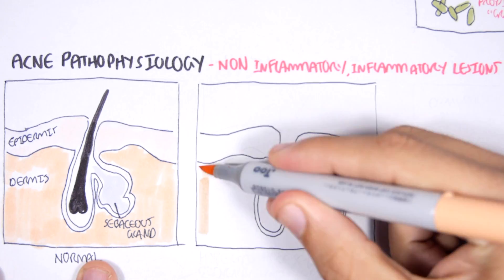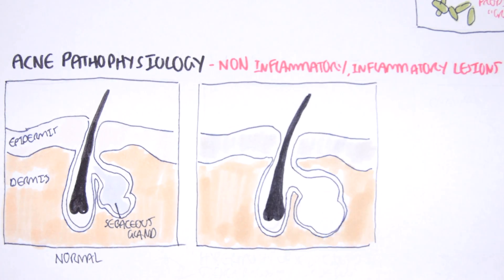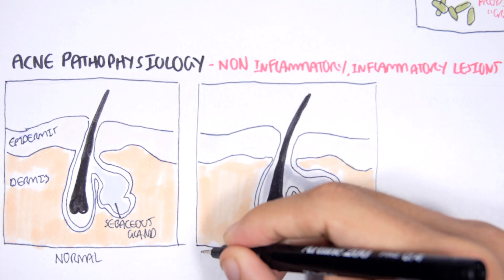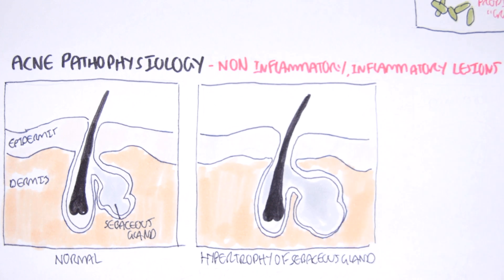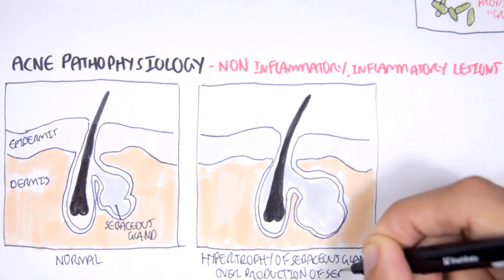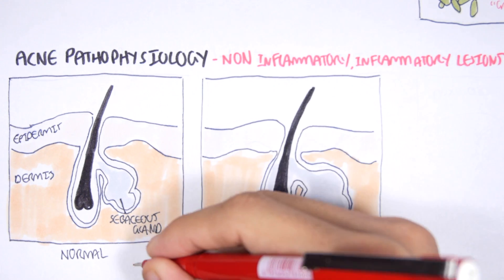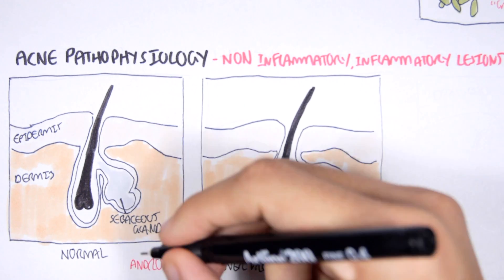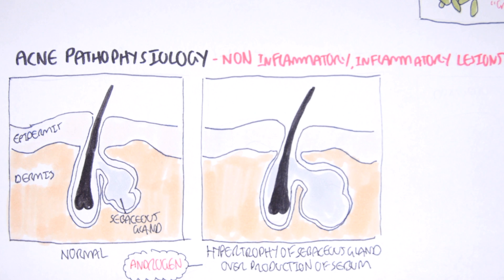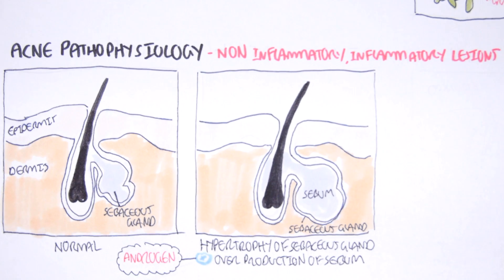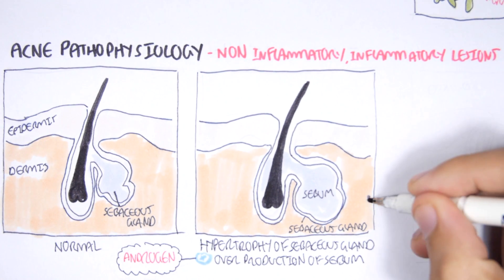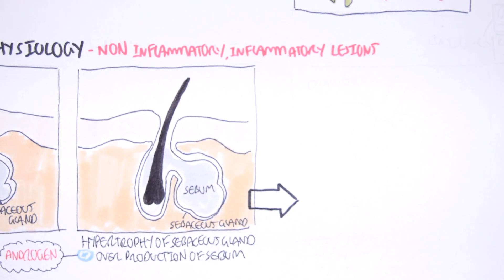As mentioned, acne is caused by an interplay of many factors. What can happen in acne pathogenesis is that there can be hypertrophy of the sebaceous glands and overproduction of sebum. This is caused mainly by hormones — androgens in particular. You might notice that typically more men have pimples than females because men have higher androgen levels. Androgens, such as testosterone, can cause hypertrophy and therefore overproduction of sebum.